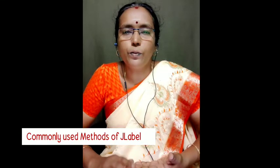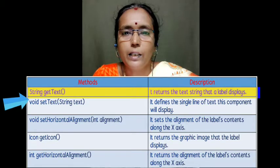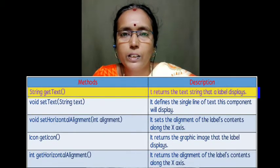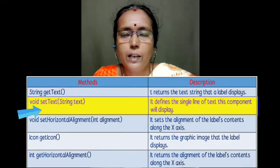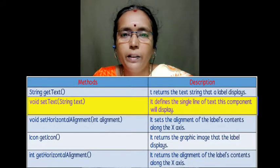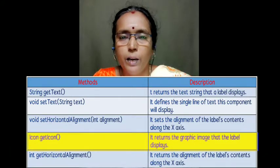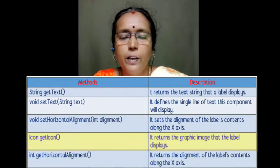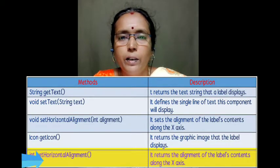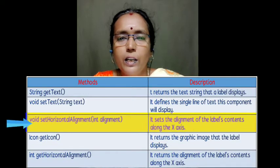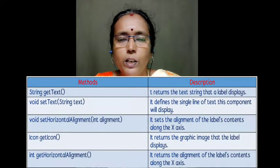Now we shall see the important methods of the JLabel class. The first method is getText, which retrieves the text available in the JLabel control. The next method is setText, which sets or fixes the title displayed in the JLabel control. The third method is getIcon, which retrieves the image available with the JLabel control. The next method is getHorizontalAlignment, which returns the alignment set for the JLabel. Similarly, we can fix the horizontal alignment using the setHorizontalAlignment method. These are the important methods used with JLabel.